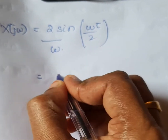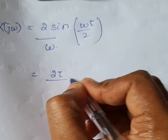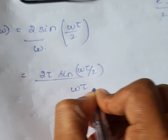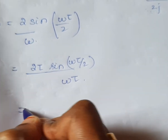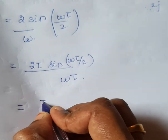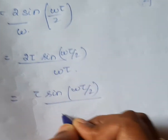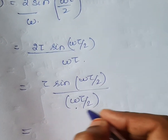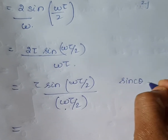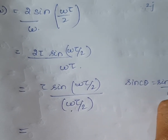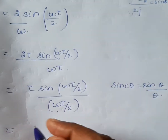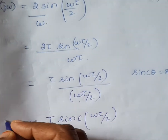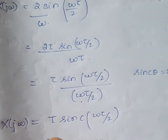To simplify, multiply numerator and denominator by τ: X(jω) = 2τ · sin(ωτ/2) / (ωτ). Taking the 2 into the denominator: X(jω) = τ · sin(ωτ/2) / (ωτ/2). This is the sinc function form — sinc(θ) = sin(θ)/θ — so the final answer is X(jω) = τ · sinc(ωτ/2).